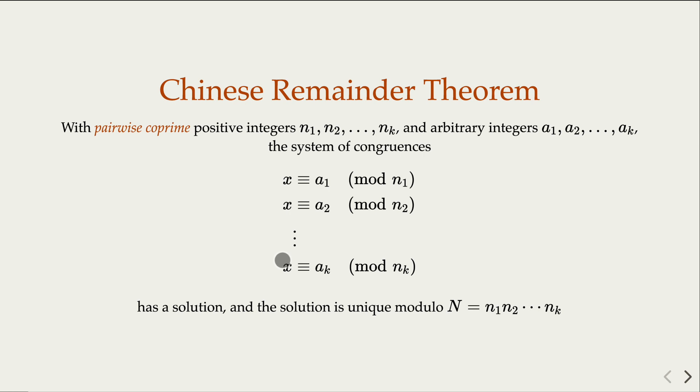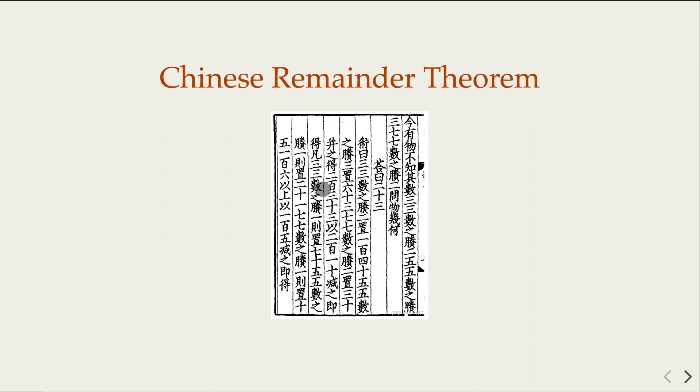The reason this is called Chinese Remainder Theorem is because it was first in a book from ancient China, that's about year 300, maybe the third century or the fourth century, the exact time we don't know.